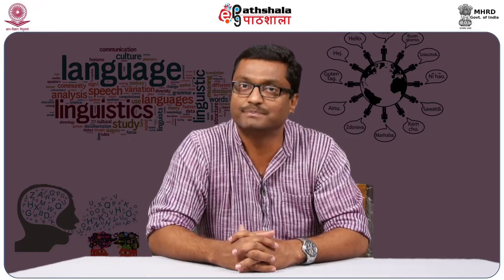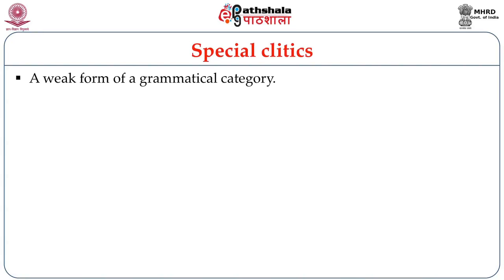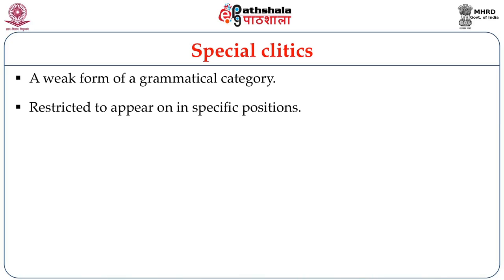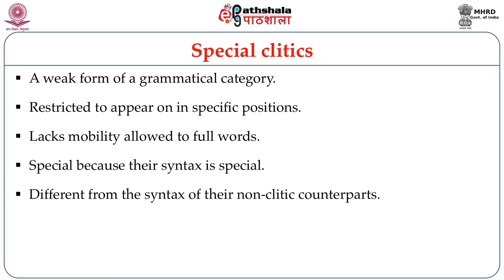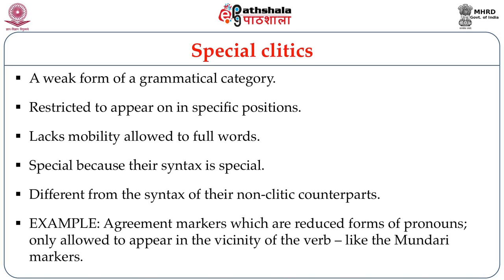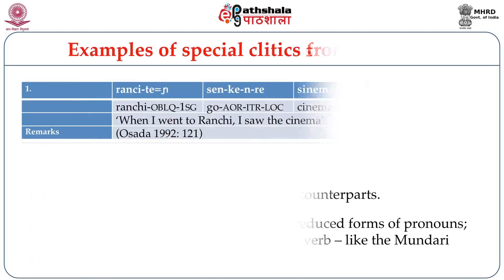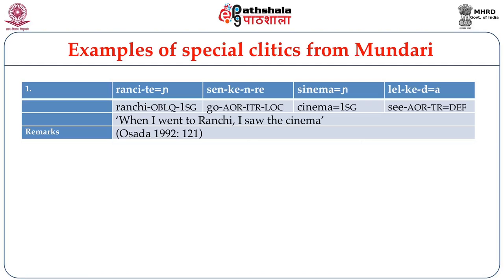Let's move to the morphosyntactically defined type — that of the special clitics. Special clitics are considered weak forms of a grammatical category. They are very often restricted to appear in specific positions. They are different from full words because they lack the mobility to appear in different places in a syntactic structure, but they may also differ in terms of their syntax from their non-clitic counterparts. Let us look at examples of special clitics from the Austro-Asiatic language Mundari, where agreement markers are actually reduced forms of pronouns.